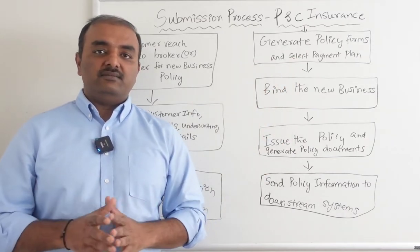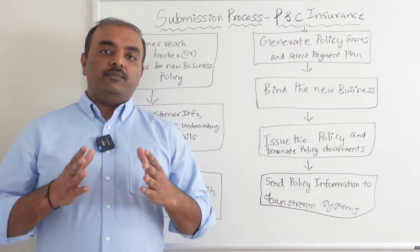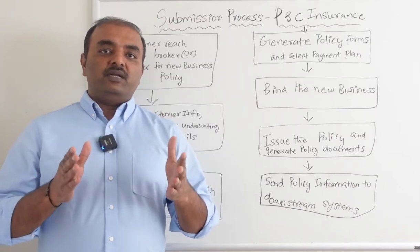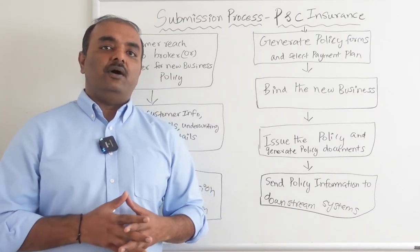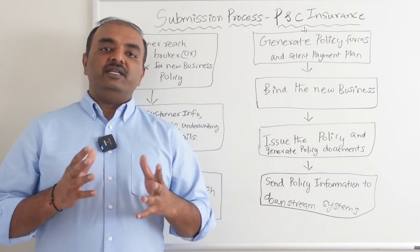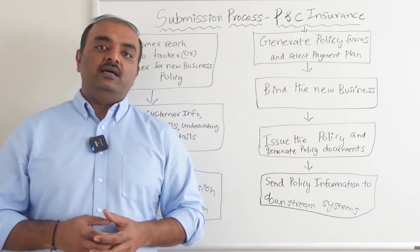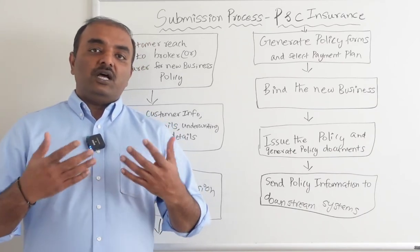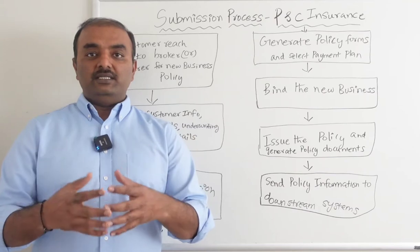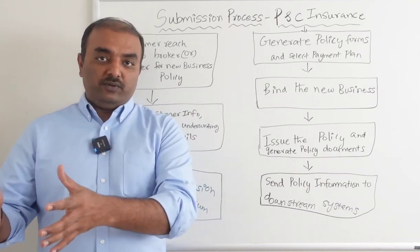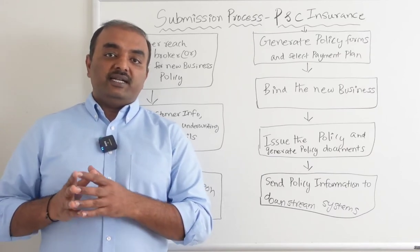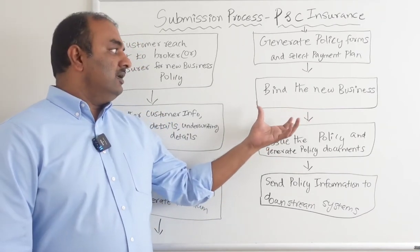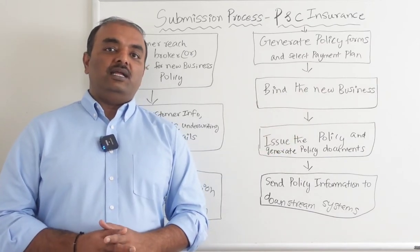Then everything is done and the final step is to issue the policy. Sometimes the customer may need the policy effective tomorrow but doesn't have all the details. For example, for commercial auto policies, the insurance company may need the VIN number for all the vehicles. If the customer says they can provide it in two days, we bind the policy — meaning the policy is effective from tomorrow, but the policy documents will not be generated until the customer provides all the information. This is the binding concept: the policy is effective, but technically not yet issued.